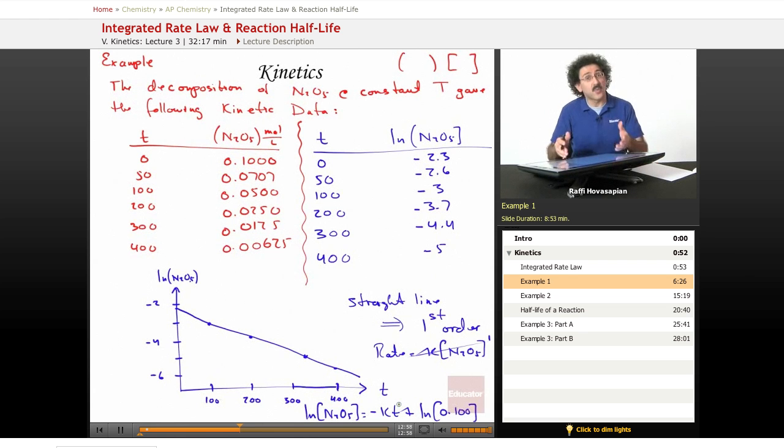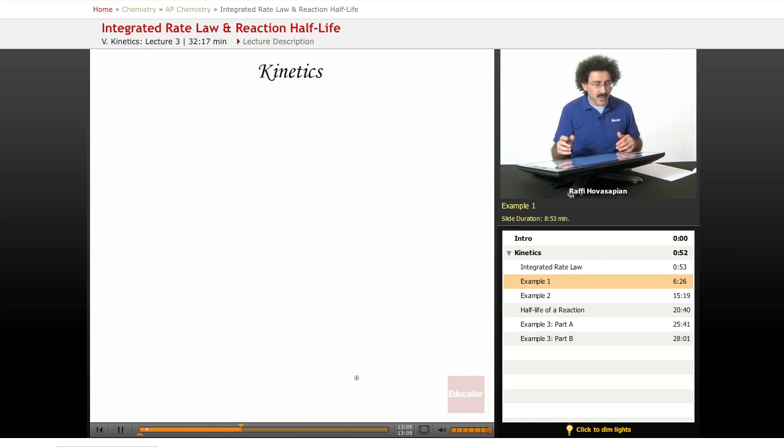Now, the second part is how do we find the rate constant? Well, we have the straight line. The rate constant is the slope, so the slope equals negative K.